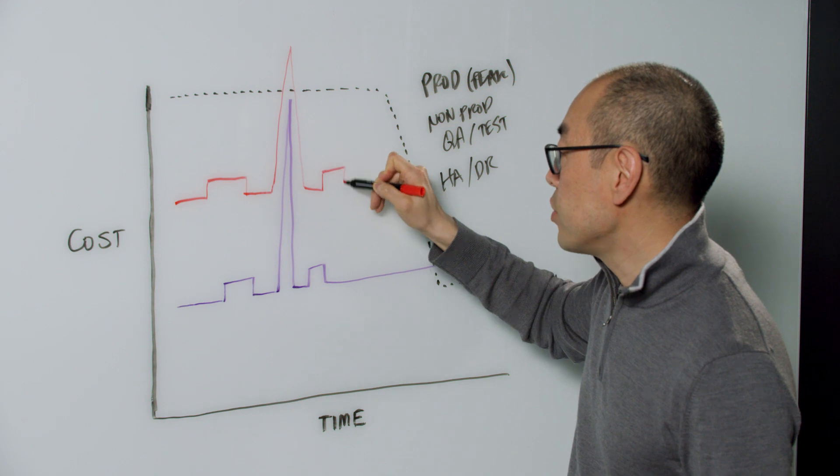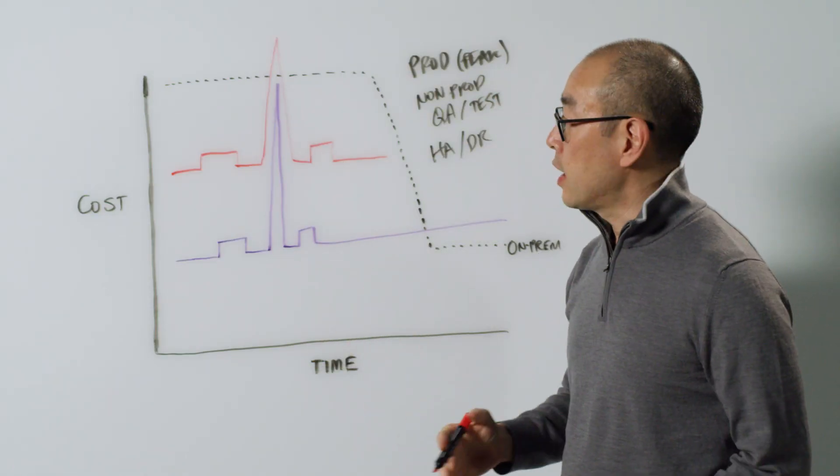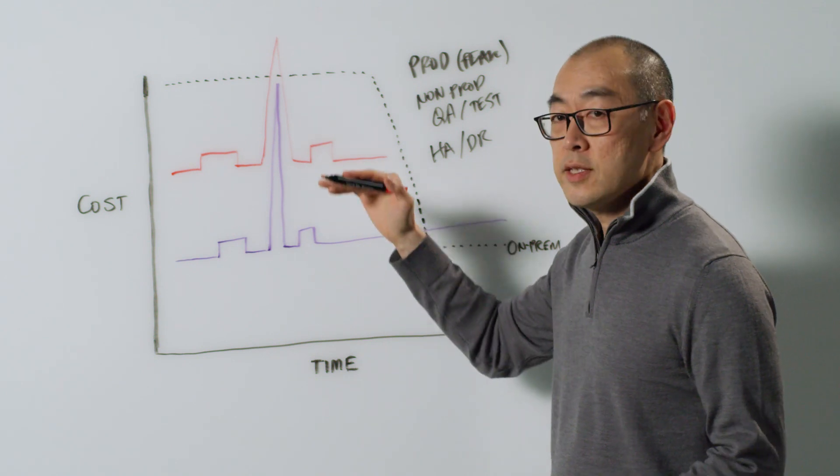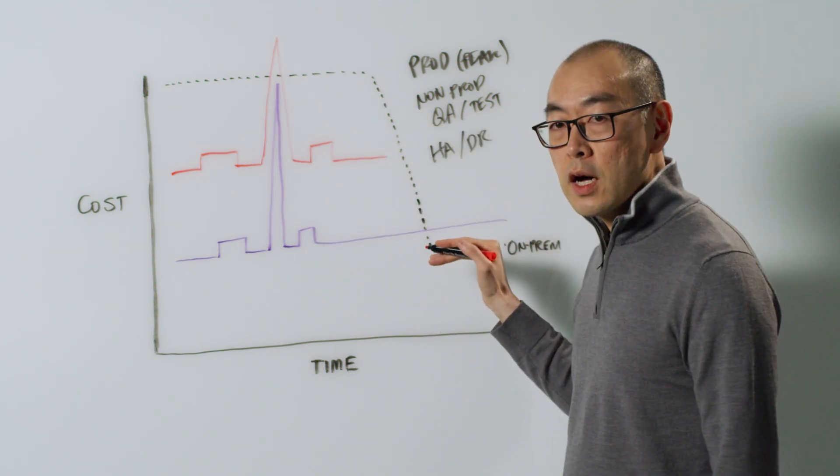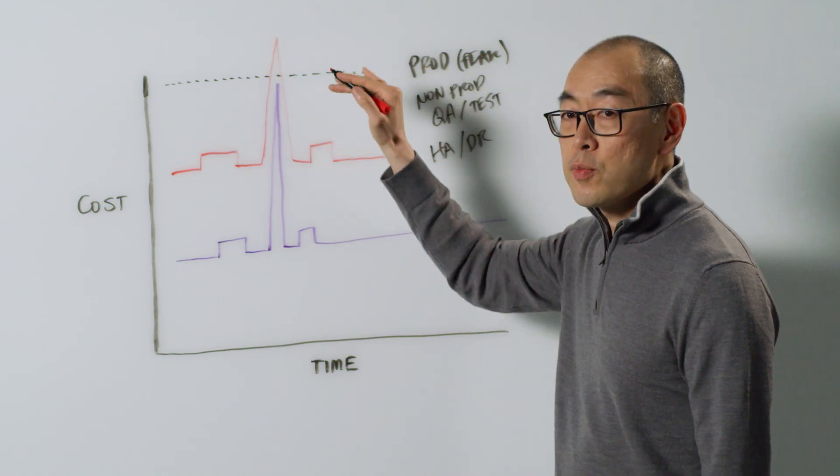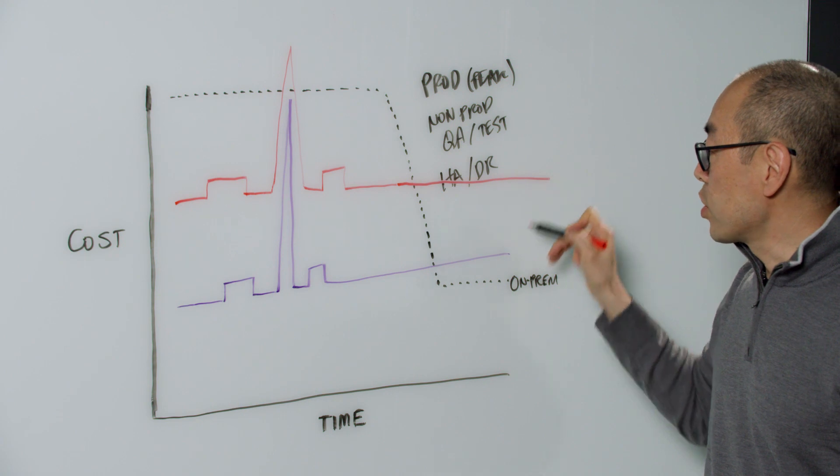So you may actually see your curve be like this where at peak and maybe even at steady state, you're pretty close to what the on-prem cost curve looks like. You may even surpass it during peak, and then this steady state goes off the chart.